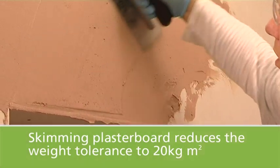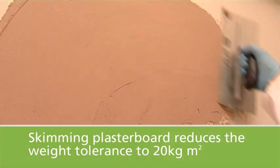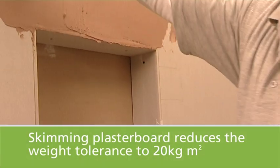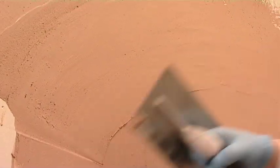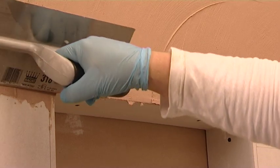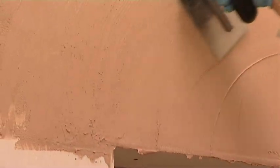Plasterboard normally allows 32 kg per meter squared, however when skimmed with plaster, the weight tolerance of the substrate is significantly reduced to 20 kg per meter squared, including the adhesive and grout weight.